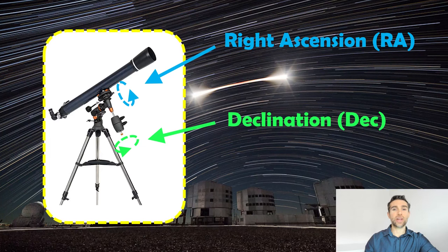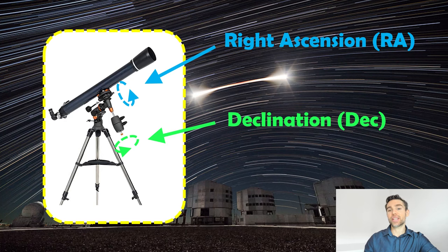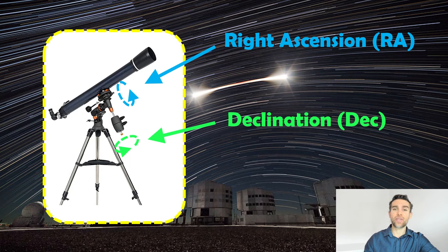Hi, welcome to this video. My name is Phil and I'm a senior lecturer in astrophysics at the University of Lincoln. I want to use this video to have a look at the right ascension and declination coordinate system for telescopes and astronomy. There are a few different sorts that you can have, but this particular one is going to relate to the equatorial style mount that you might get on a telescope.